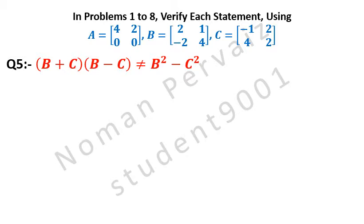In problems 1 to 8, verify each statement using matrix A having elements 4, 2, 0 and 0; matrix B having elements 2, 1, minus 2 and 4; and matrix C having elements minus 1, 2, 4 and 2.